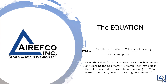Using the values from our previous two-minute tech tip videos on clocking the gas meter and temp rise, let's plug in the values needed to make this calculation. The values needed are 81.82 cubic feet per hour, 1,000 BTUs per cubic feet, and a 65 degree temperature rise.